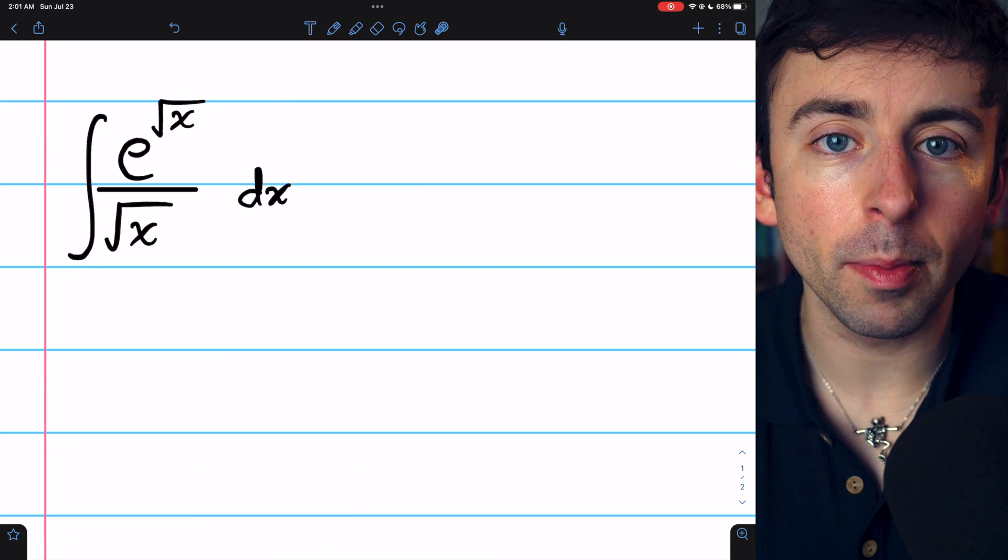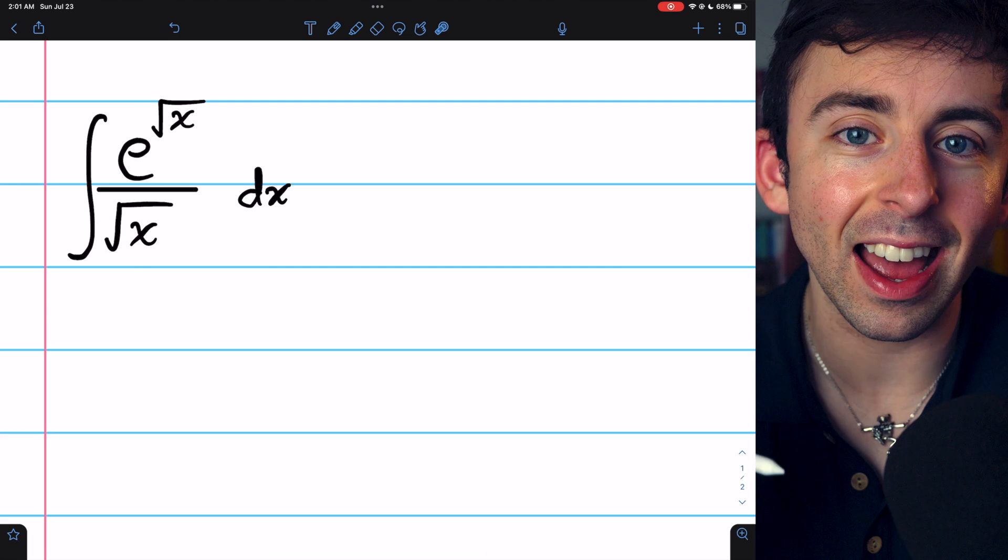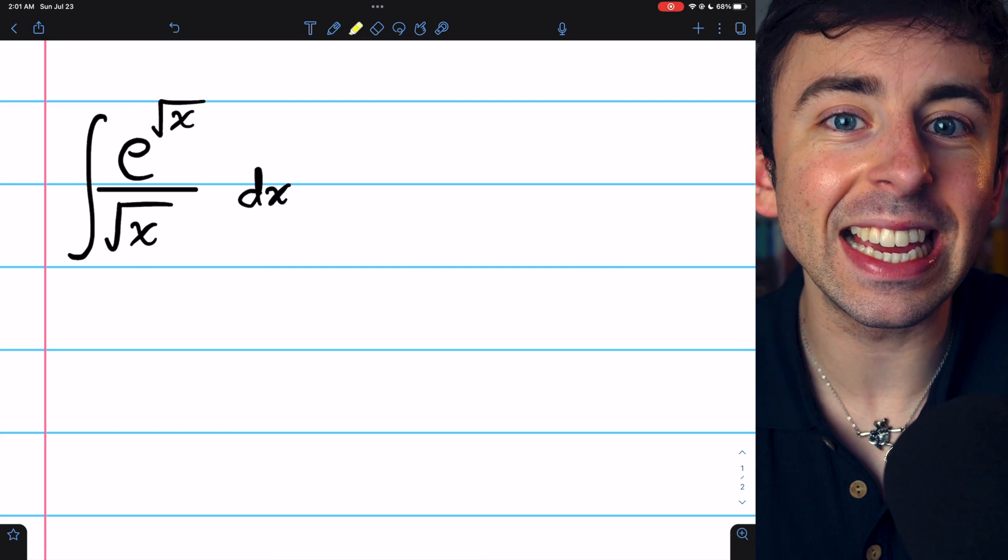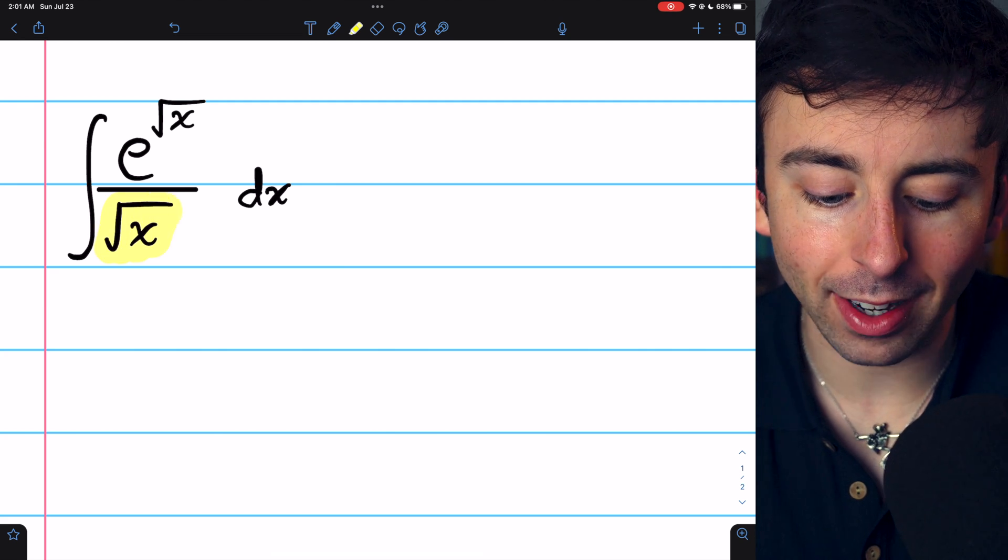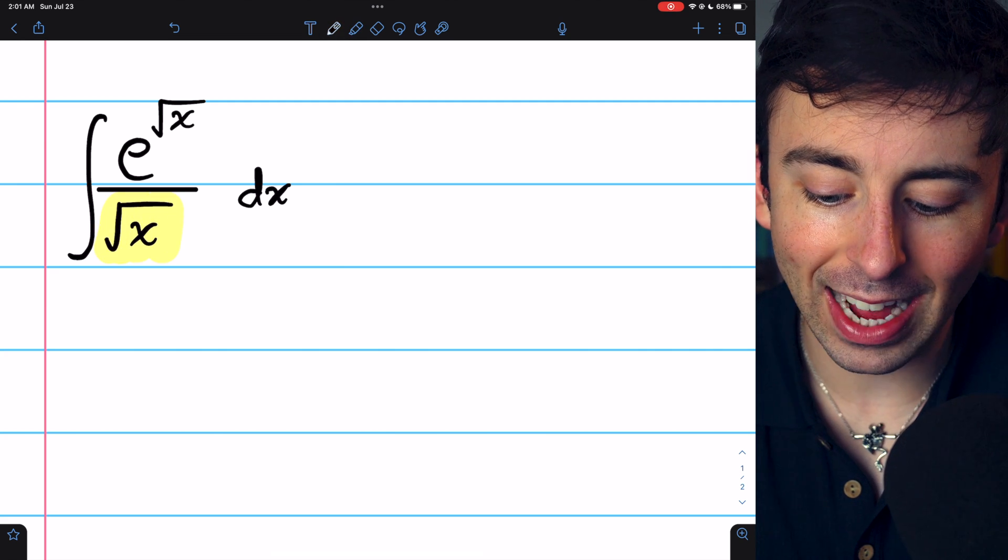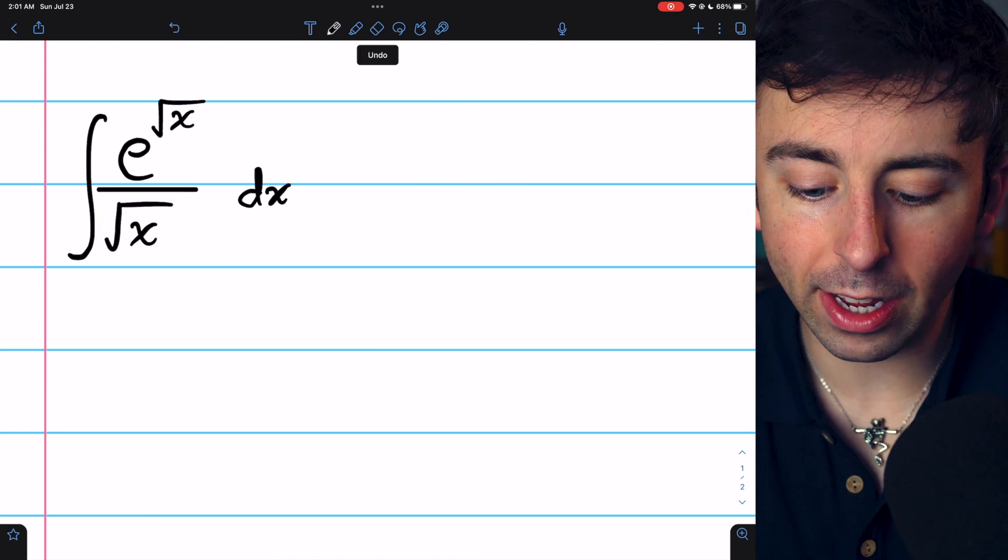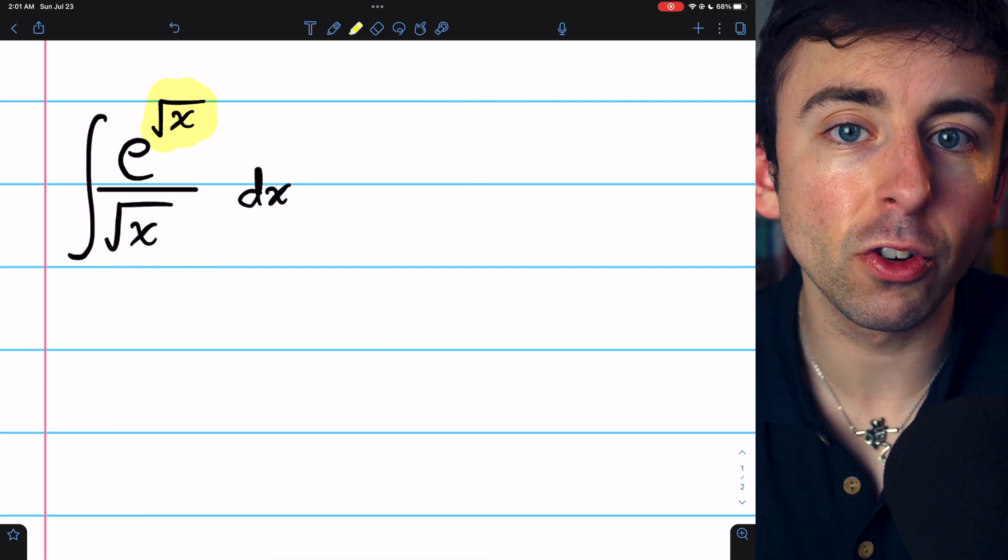When you think about u-sub, first you should consider letting u equal the inside function. In this case, there are two options for what the inside function might be. It could be this square root x in the denominator, because that's inside the reciprocal function, or it could be this square root of x that is inside the exponential function.